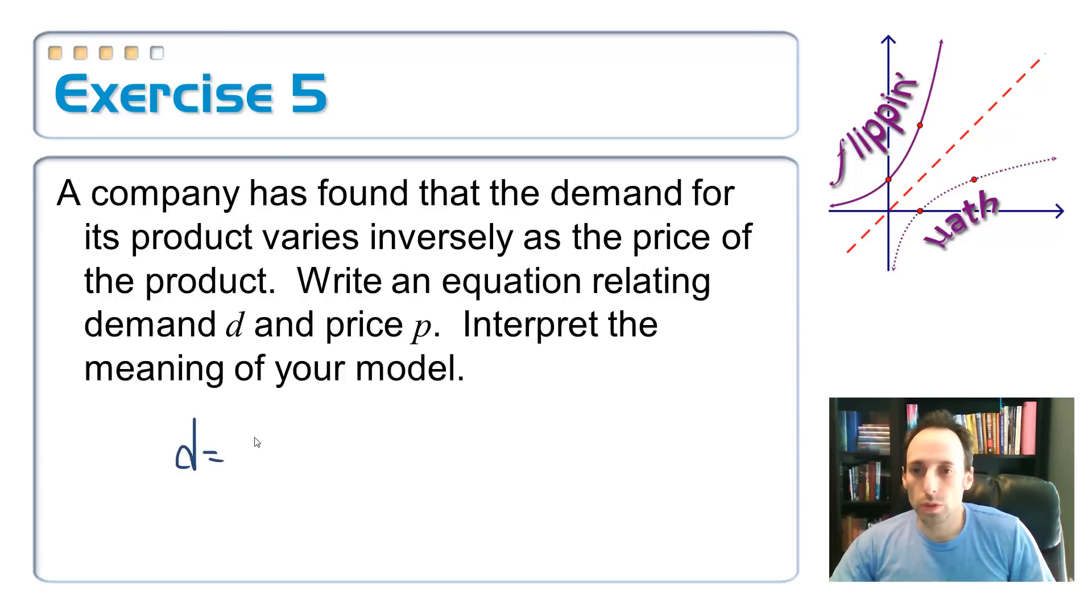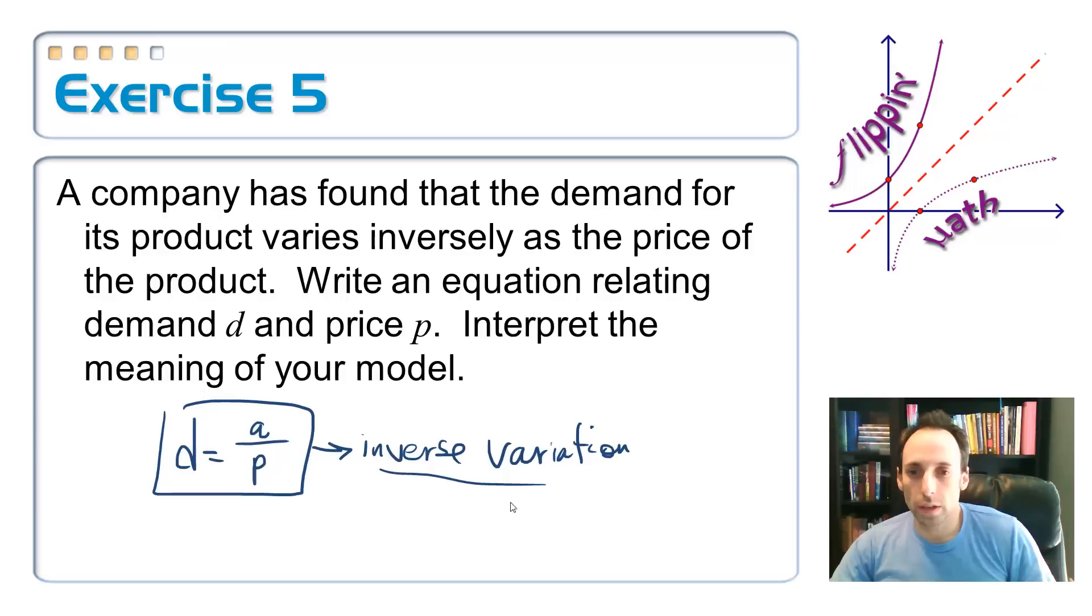Demand is equal to constant divided by the price. This is what is called inverse variation. And what it means again is as price goes up, so price increases, then demand decreases. As one of the quantities goes up, the other one has to go down.